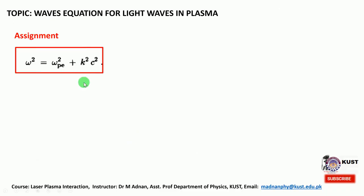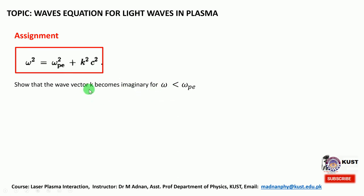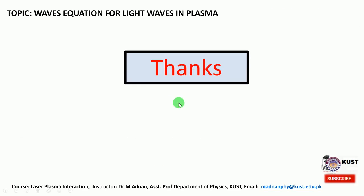Before that, go through this small assignment. For the homogeneous density plasma case we obtained ω² = ωp² + c²k². You need to show how the wave vector k becomes imaginary when the electromagnetic wave frequency is smaller than the plasma frequency ωp, so that k is imaginary and the wave will not propagate through the plasma. Obtain the value of k from this expression under that condition, verify it becomes imaginary, and confirm the wave cannot propagate. With this, I thank you for your time.